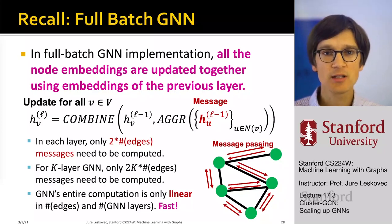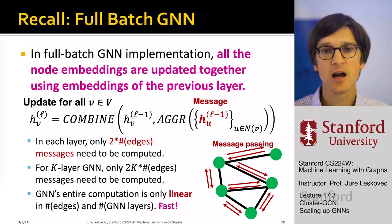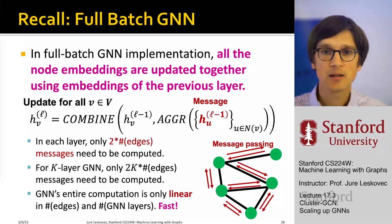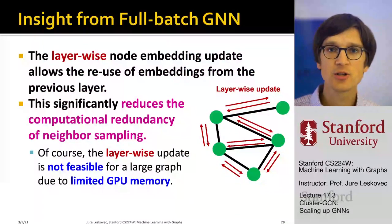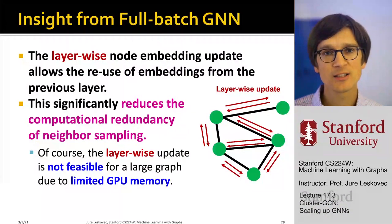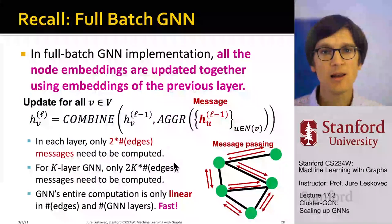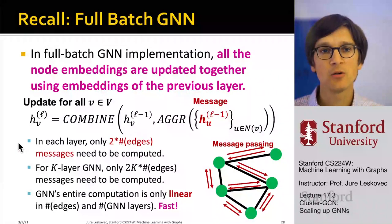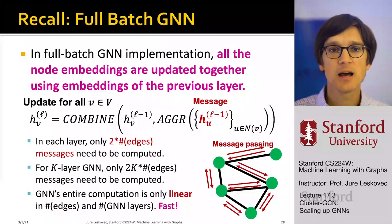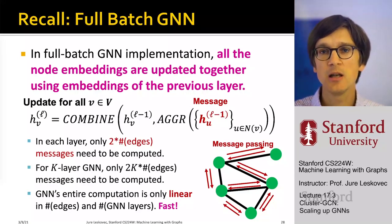The key observation is that the amount of computation needed in a single layer of a full-batch implementation is linear in the size of the graph — linear in the number of edges — so it is very fast. The insight from full-batch GNN is that layer-wise node embedding updates allow us to reuse embeddings from the previous layer, which significantly reduces the computational redundancy of neighborhood sampling. All I need to do is take previous layer embeddings, aggregate them, combine them with the previous layer embedding of a given node, and I have a new embedding. This is a linear time operation because aggregation is linear in the number of edges.